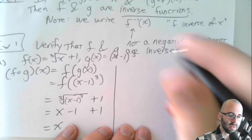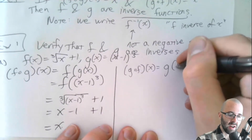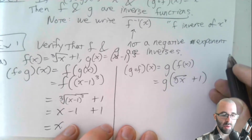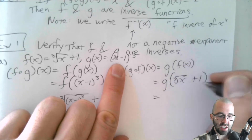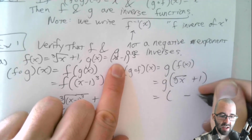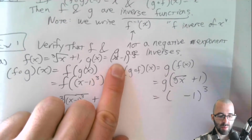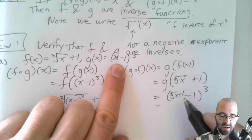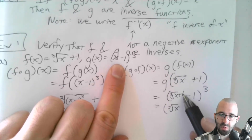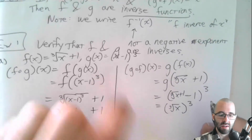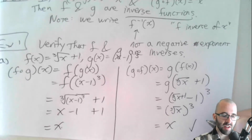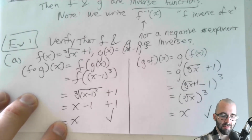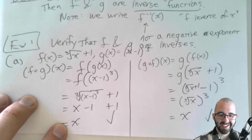We also have to show it the other direction: g(f(x)). Start on the inside — f is ∛(x+1) — and plug that into g. G is something minus 1, all cubed. So we get (∛(x+1) − 1)³. The cubed root of x plus one, minus one — the ones cancel — leaving just ∛(x) cubed, and those cancel too. We're left with x. We've shown it in both directions, verified with check marks in both cases — we're done.